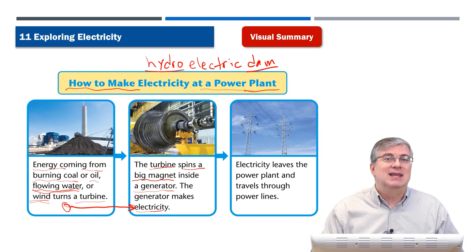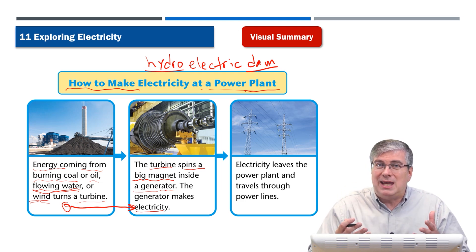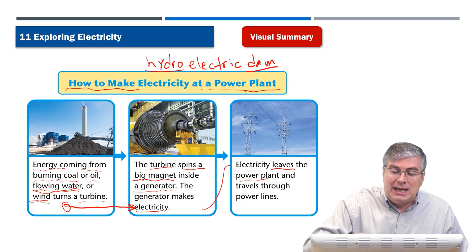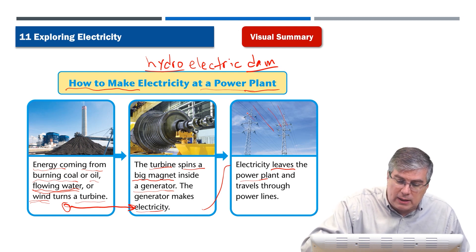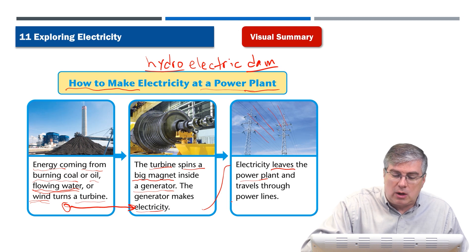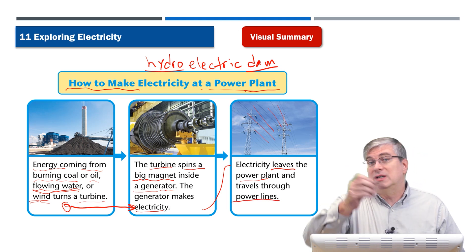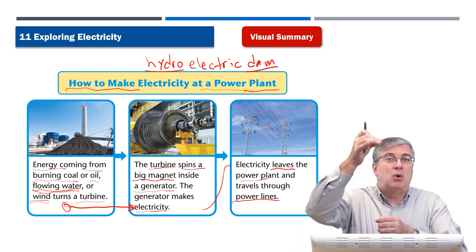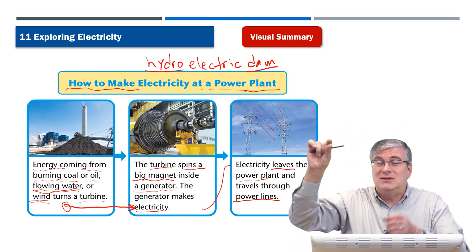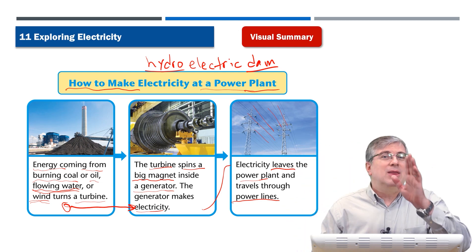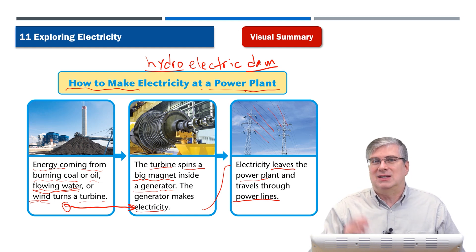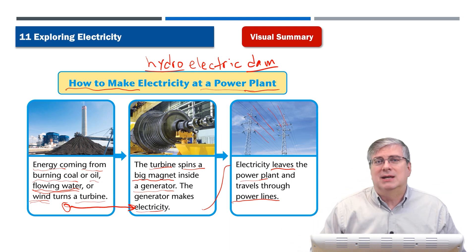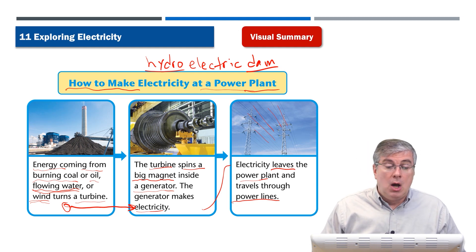But how does electricity get to your house? Electricity leaves the power plant and travels through wires — you see these wires behind big towers. We call those power lines. Driving in the countryside, you see big metal towers or wooden poles with one or two lines connecting them — those are electrical wires. Be careful: if a pole falls and the wire is on the ground, stay away and call for help — very dangerous.